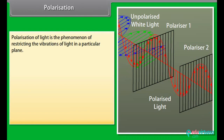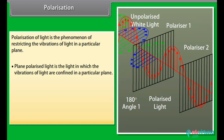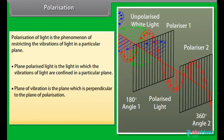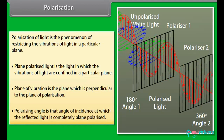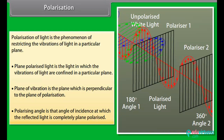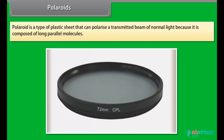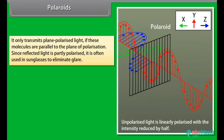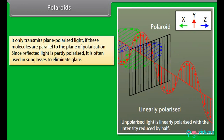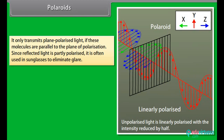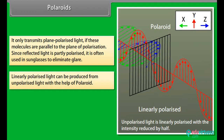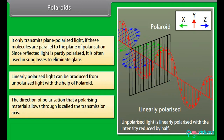Polarization of light is the phenomenon of restricting the vibrations of light in a particular plane. Plane polarized light has vibrations confined to a particular plane. The plane of vibration is perpendicular to the plane of polarization. The polarizing angle is that angle of incidence at which reflected light is completely plane polarized. A polaroid is a plastic sheet that polarizes a transmitted beam of normal light because it is composed of long parallel molecules; it only transmits plane polarized light with molecules parallel to the plane of polarization. Reflected light being partly polarized makes polaroids useful in sunglasses to eliminate glare.